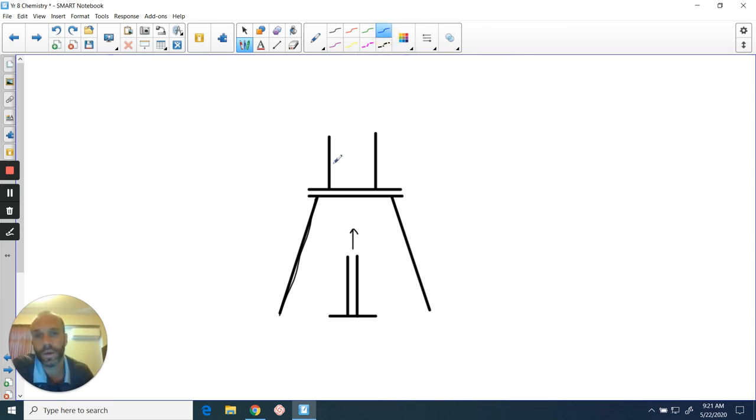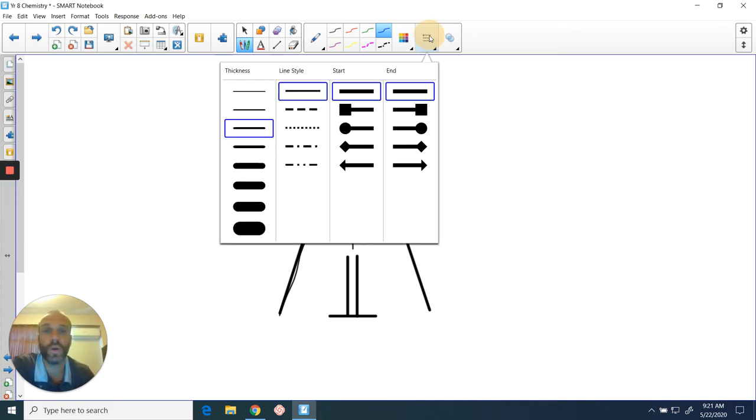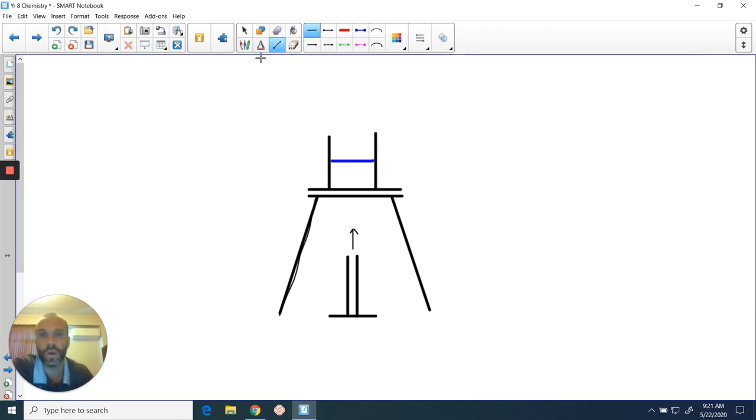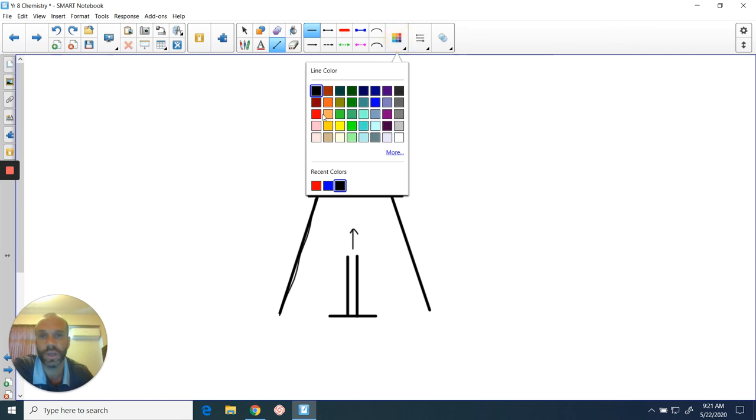Here we've got a very simple diagram of the apparatus setup if you were using a Bunsen burner to heat up some water. I could just put a line across there to show that that's water. Now the other thing you'd need to do is to label that, and in science we do have a specific way to label. We have to make sure that the line that is used to indicate the label is actually touching the piece of apparatus that you're talking about.